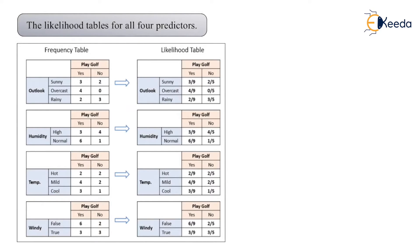Now we build the likelihood tables for all four predictors. We have done it for outlook, we did it for humidity, we did it for temperature, we did it for windy — and for every frequency table, we calculate the corresponding likelihood table.